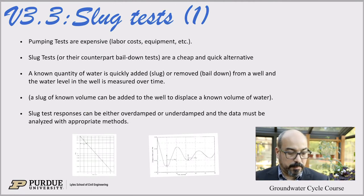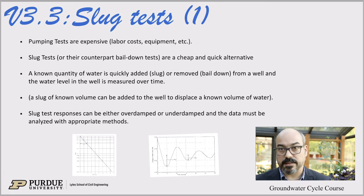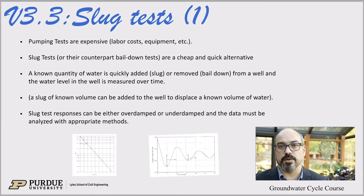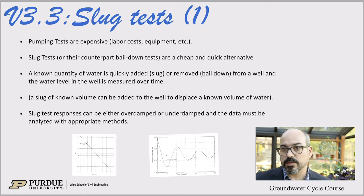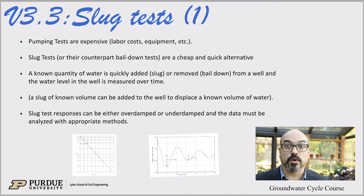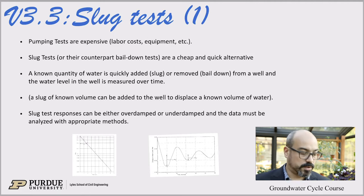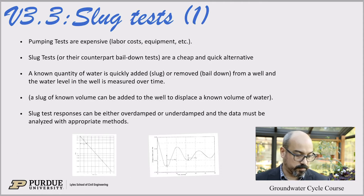Pumping tests are very expensive — labor costs, equipment, etc. So slug tests are a poor man's aquifer test. The counterpart is a bail down test, which is equivalent to a slug test but instead of raising the water level by dropping a slug, you're bailing down — removing a volume of water from the hole. That can be done with a scoop or a pump where you remove a known volume of water and then let it recover. So it's a cheap and quick alternative: a known quantity of water is added or removed, and then you observe.